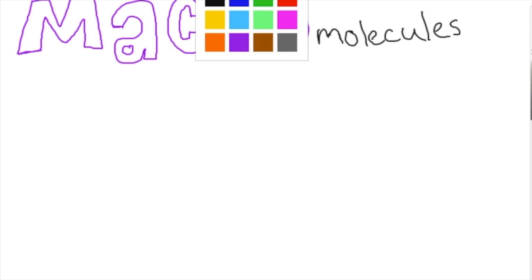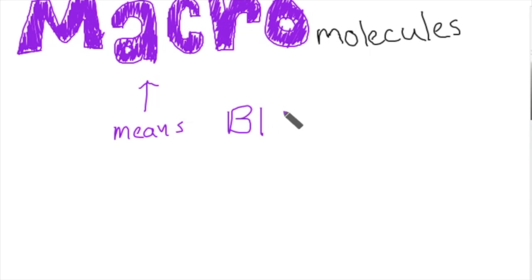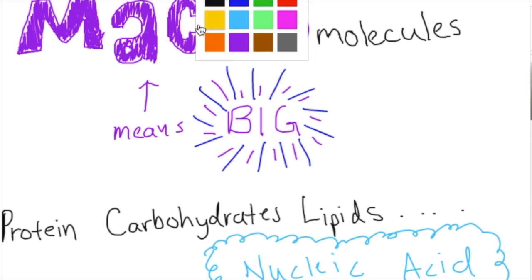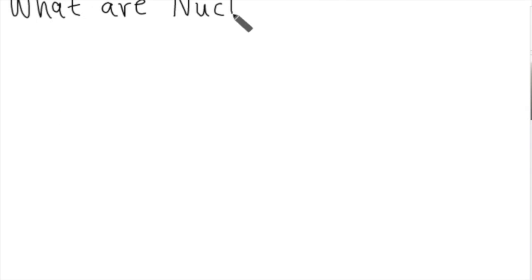Hey everybody, my name is Danielle, and today we're going to be talking about a specific type of macromolecule called nucleic acid. So first off, macro means big. So these molecules are the big four major categories of molecules that basically make up everything in your entire body. These molecules are protein, carbohydrates, lipids, and of course, nucleic acids, which is what we're going to be spending most of our time talking about today.